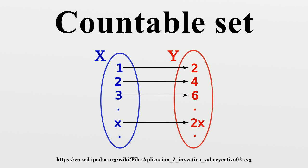This is only effective for small sets. For larger sets, this would be time-consuming and error-prone. Instead of listing every single element, sometimes an ellipsis is used, if the writer believes the reader can easily guess what is missing. For example, {1, 2, 3, ..., 100} presumably denotes the set of integers from 1 to 100. Even in this case, it is still possible to list all the elements, because the set is finite.